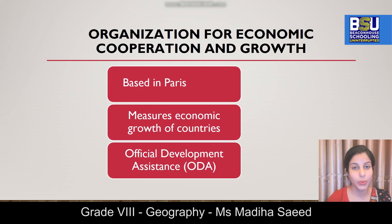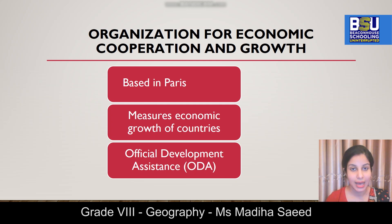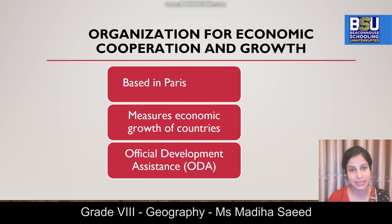OECD was established in 1961 and its headquarters are in Paris. Now the last question for the day: how does OECD help poor countries? It does that through Official Development Assistance, or ODA. ODA are basically the funds raised by developed member nations of OECD to help developing or underdeveloped nations.